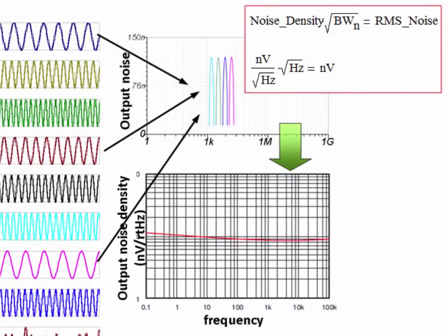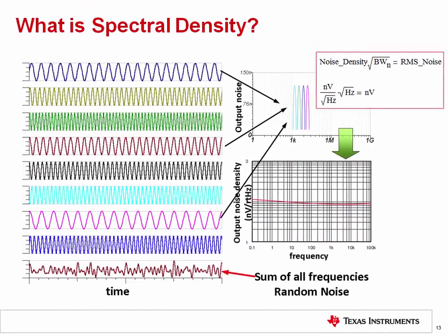Voltage noise spectral density is often a confusing parameter to engineers who are not familiar with noise analysis. Spectral density has units of nanovolts per square root hertz. Multiplying spectral density by the square root of the noise bandwidth gives the RMS noise, as shown in the equation on the top right. Looking at the units in the equation, you can see how the square root hertz cancels out. The spectral density curve is the main amplifier specification used to describe an amplifier's noise characteristics. In this video series, we will use the spectral density curve extensively in noise calculations.